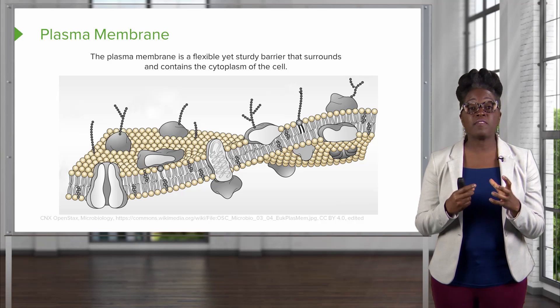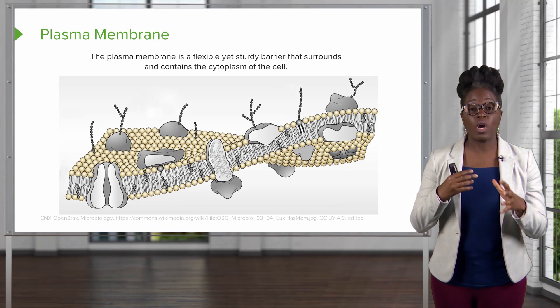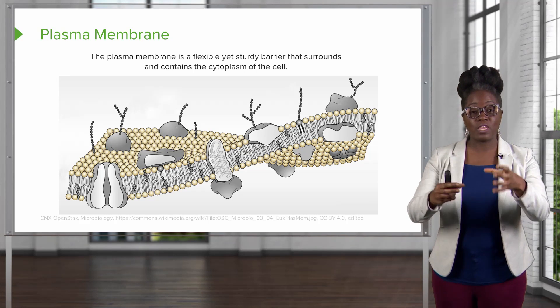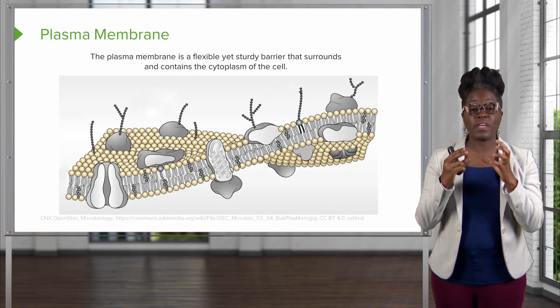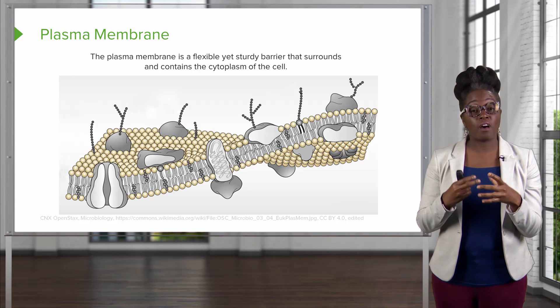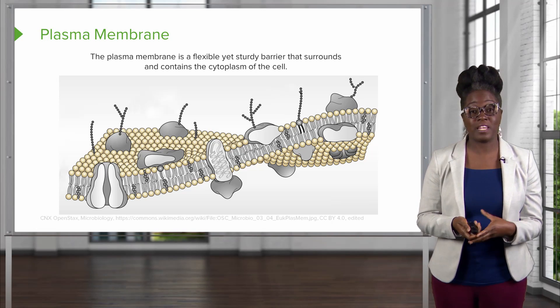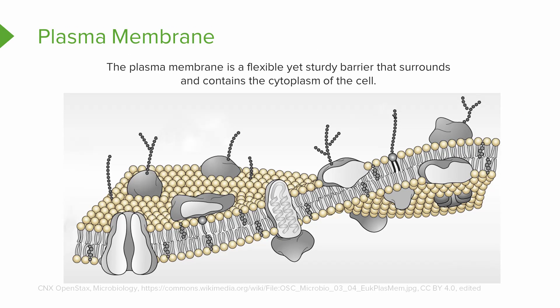When you think of the plasma membrane, even though it is a barrier, think about bubbles. A bubble is a very thin film and it's made up of lipids — that's exactly how our plasma membrane is made up. It is a double lipid bilayer made up of phospholipids, where you have phosphates facing the outside and the inside of the cell, and then in between, you have fatty acid tails facing each other.